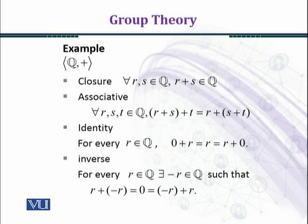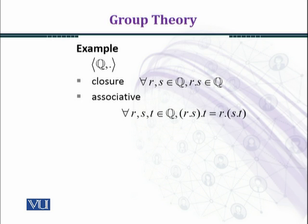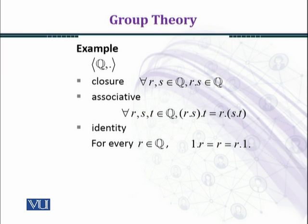Now we consider some more examples. Does Q form a group under the binary operation multiplication? First, the closure property is satisfied: when you multiply two arbitrary rational numbers, the answer is a rational number. The associative property is also satisfied, because real numbers are associative under multiplication. One is the multiplicative identity, and the identity law is satisfied: 1 times r equals r equals r times 1 for all r belonging to Q.